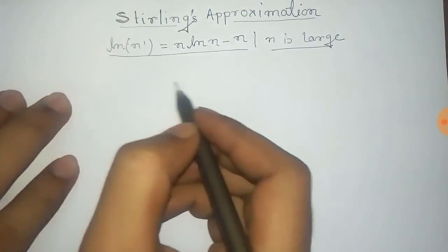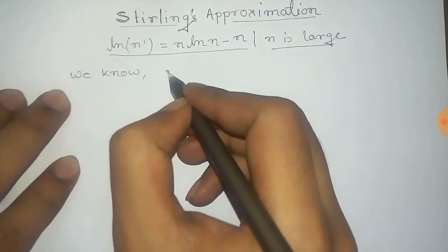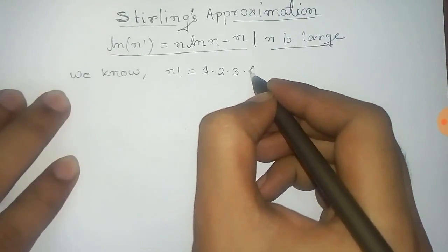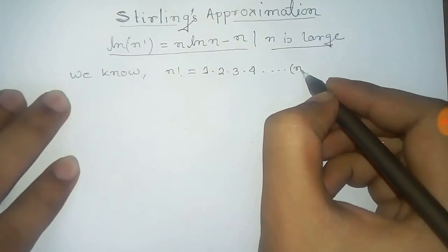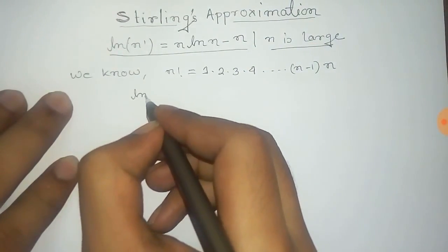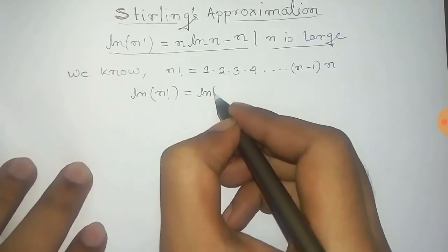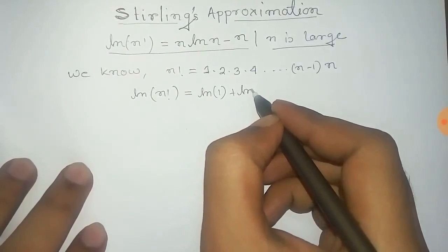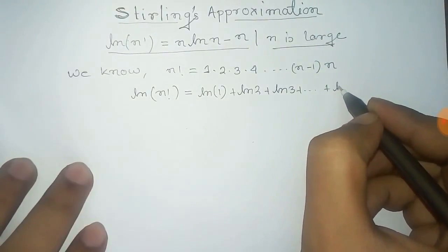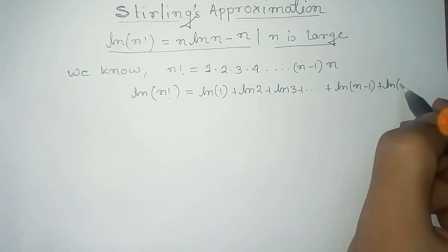So let's start. We know that the factorial of n is equal to 1 times 2 times 3 times 4 times 5 times 6, and so on, until it becomes (n minus 1) times n. If we apply logarithm on both sides, it becomes log 1 plus log 2 plus log 3, plus so on, until it becomes log(n minus 1) plus log n.